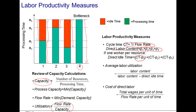We can define the average labor utilization in the process as a ratio between the labor content — the sum of the processing times — and the labor content plus all the direct idle time. The labor content measures how much productive time there is, while the denominator captures how much time we have to be paying for in total. Finally, we define the cost of direct labor as total wages per unit of time — for example, four workers times the hourly wage rate — divided by the flow rate per unit of time.